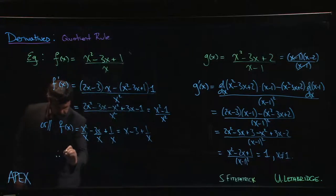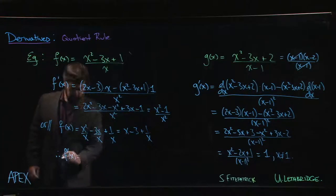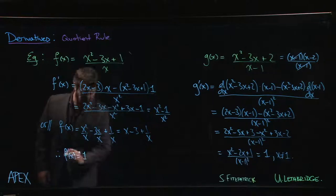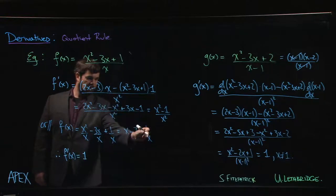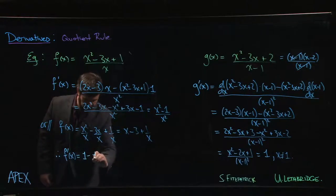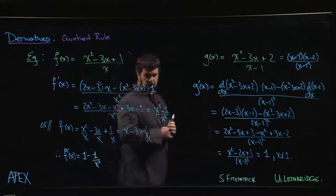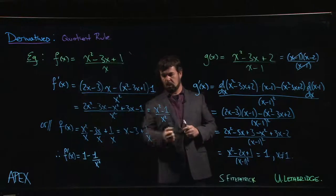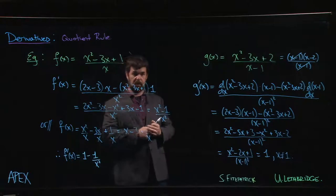And therefore, using the sum and difference rules, f prime is going to be the derivative of x, which is just 1, the derivative of a constant is 0. And the derivative of 1 over x, we just saw that the derivative of 1 over x is minus 1 over x squared using the power rule for negative integers. This is x to the minus 1, derivative is minus 1 times x to the minus 2, which we put in the denominator.